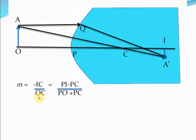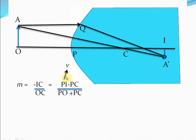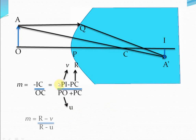IC is the same as PI minus PC, and OC is the same as PO plus PC. PI is V (the image distance), PC is the radius of curvature R, and PO is the object distance U. Substituting these values, we get M equal to (R minus V) divided by (R minus U).